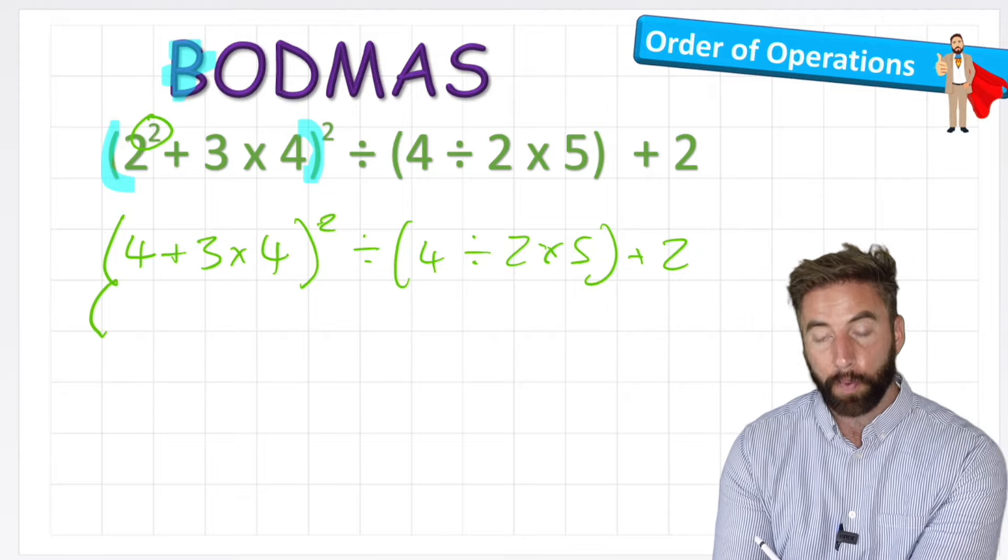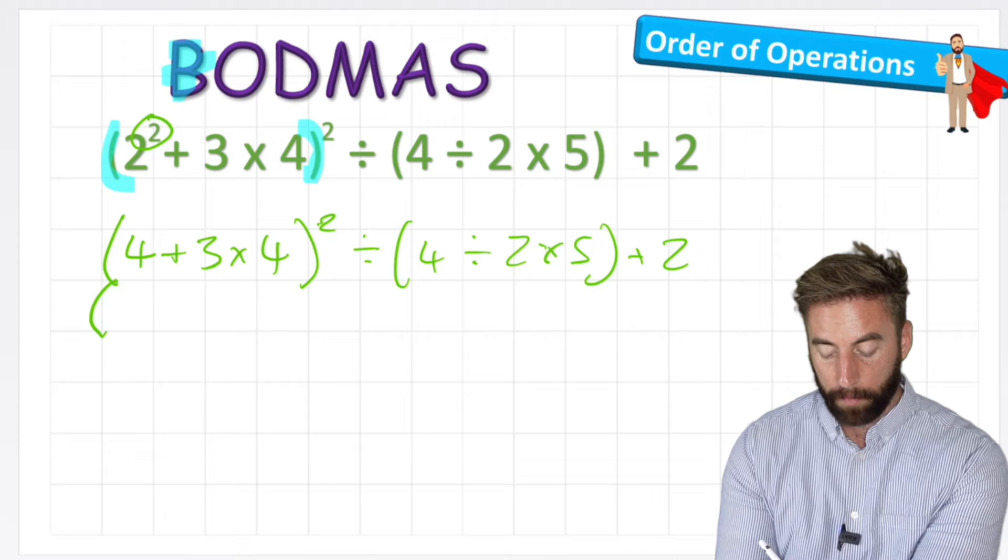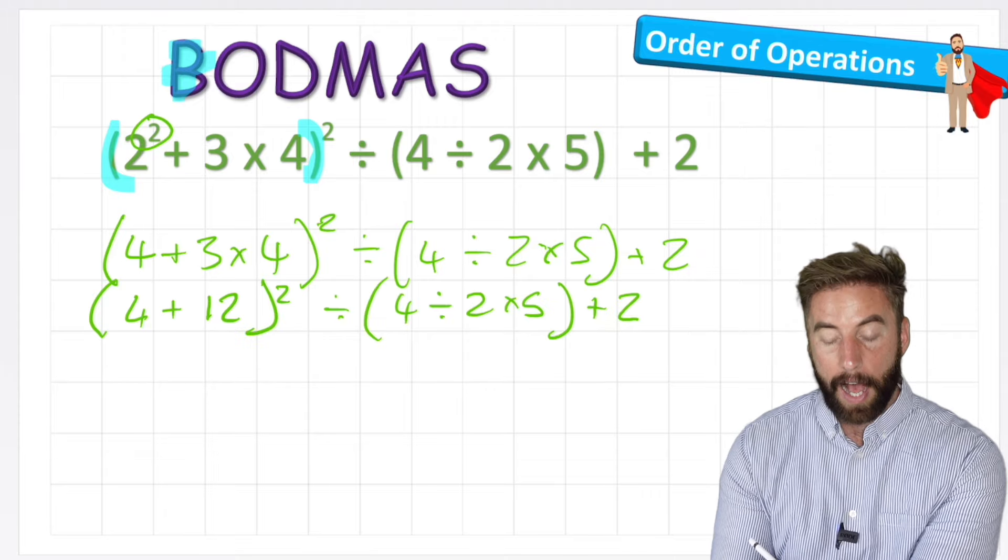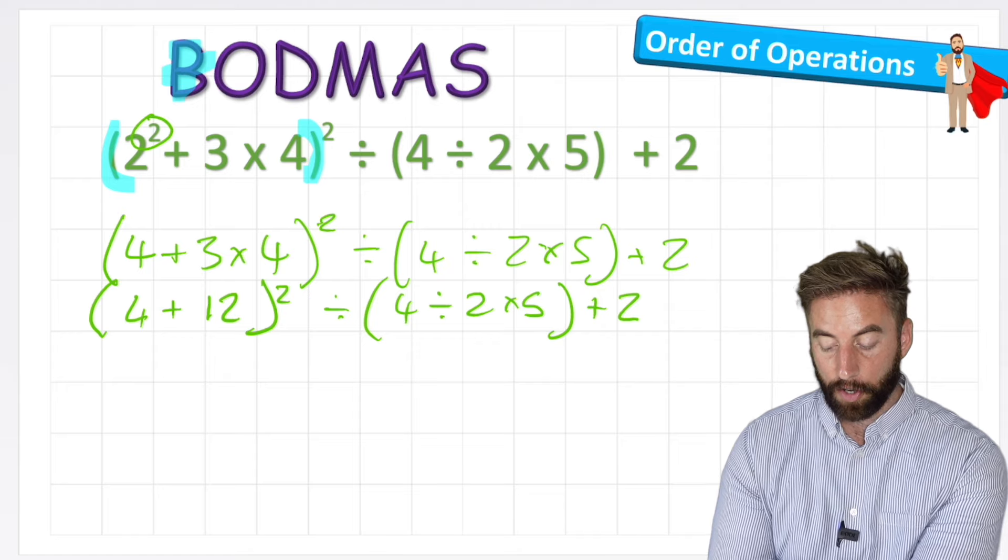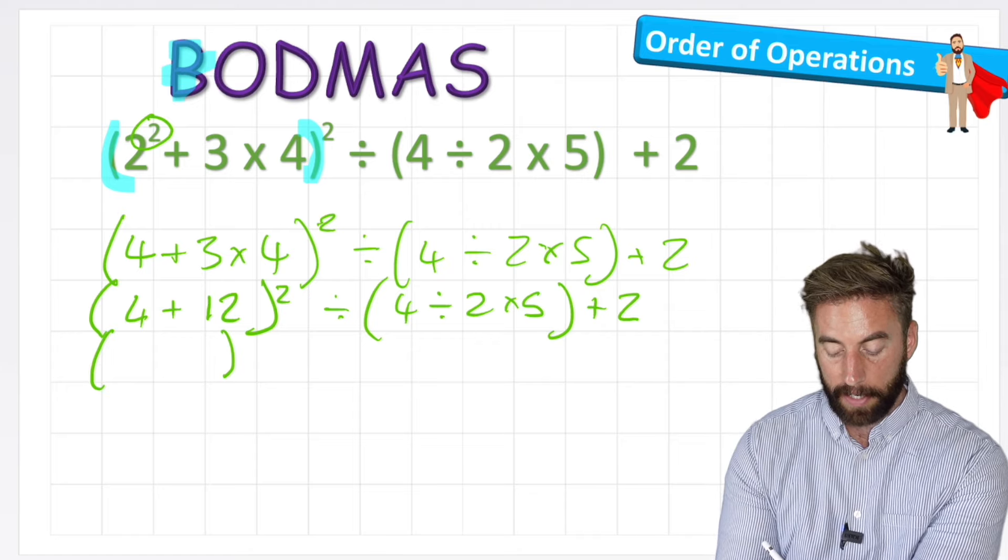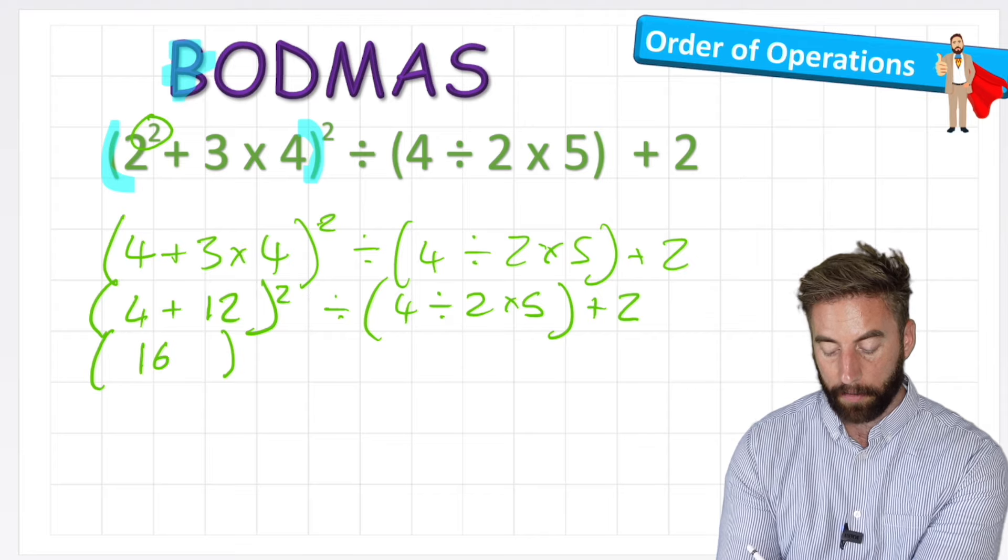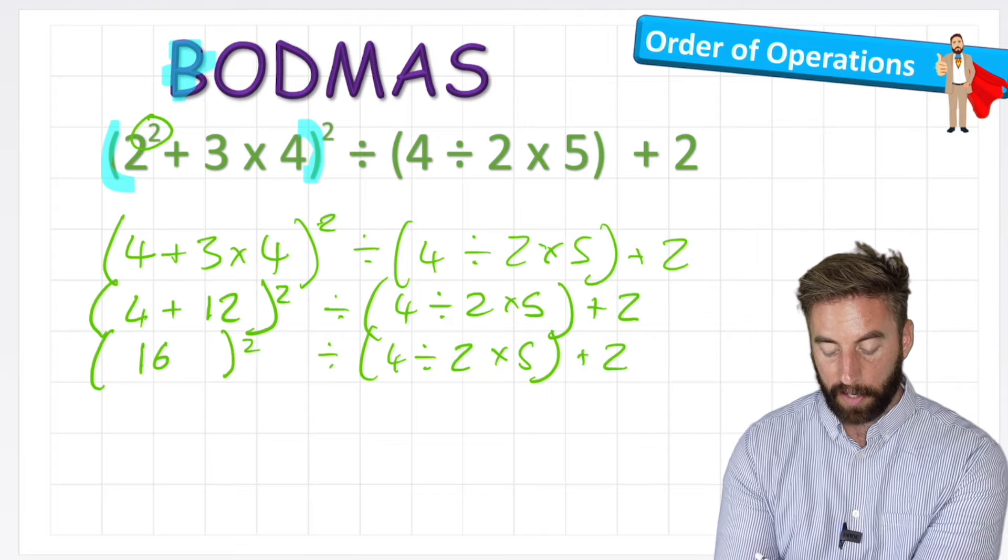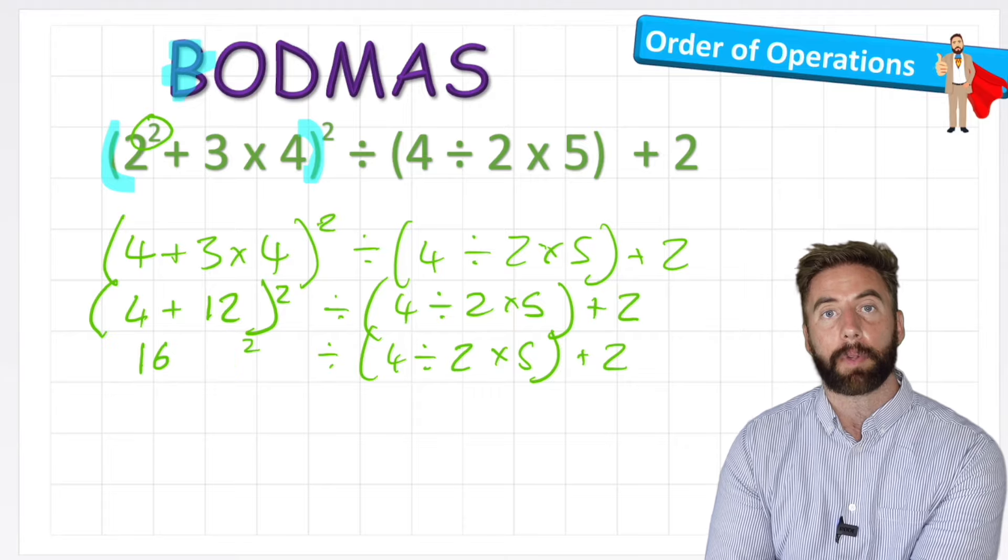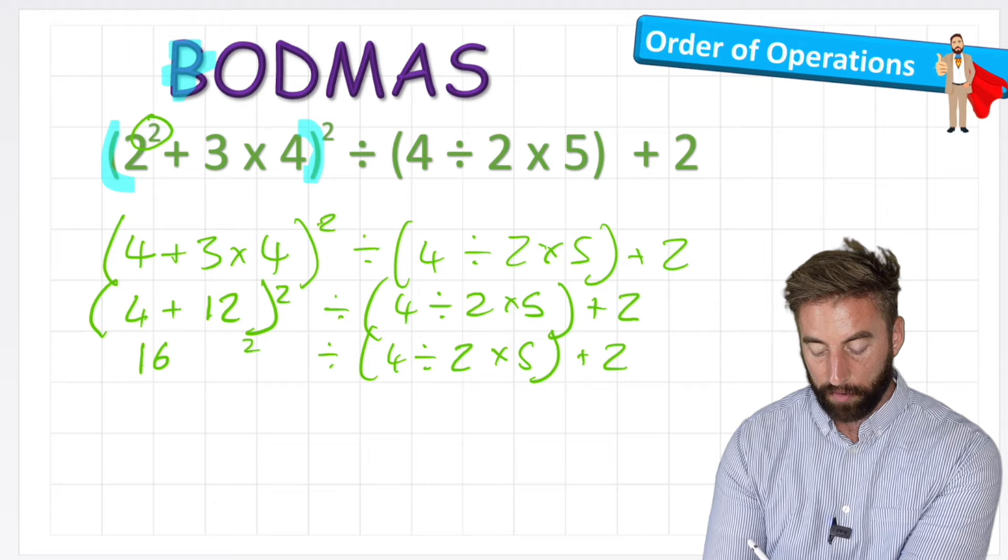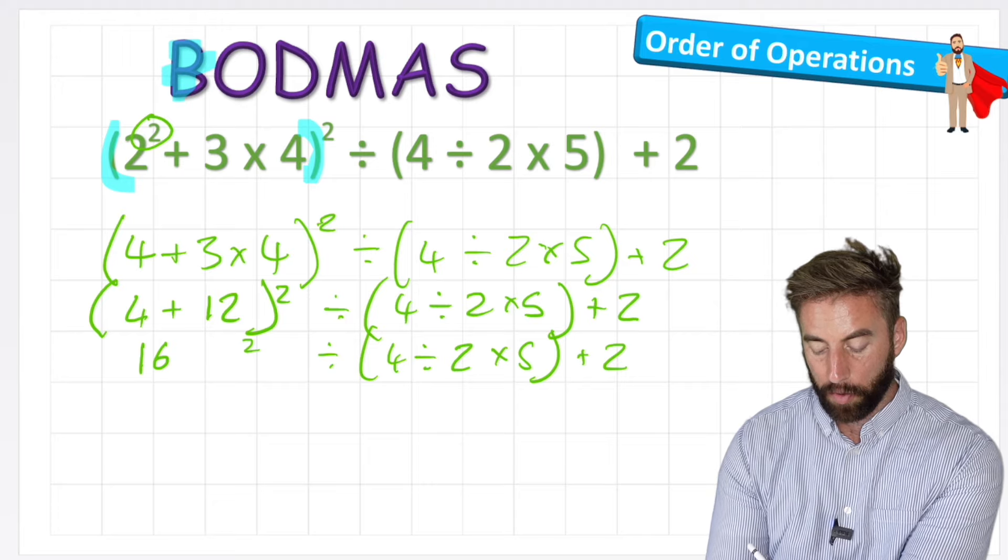3 times 4, which is 12. So I've got 4 plus 12 to the power of 2. Now within this bracket, I can finish off with my addition, and 4 plus 12 is 16, so it'll be 16 to the power of 2. And because 16 is on its own, I can actually get rid of that bracket, and I can simply work out 16 squared. And 16 times 16 is actually 256, so I'd end up with 256.